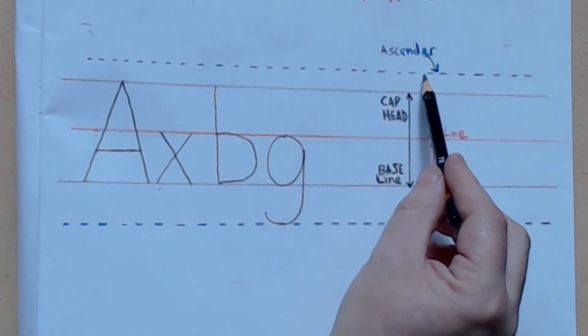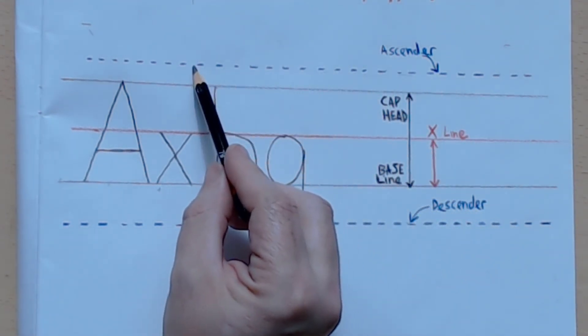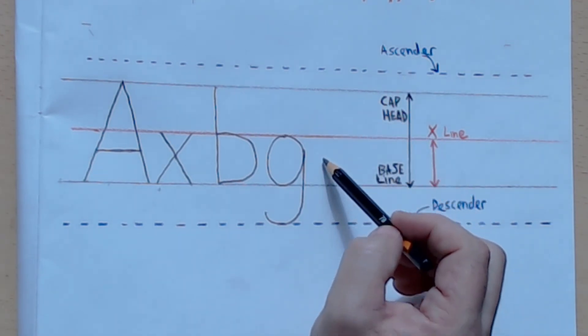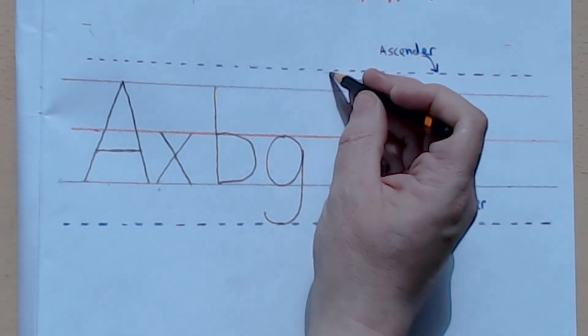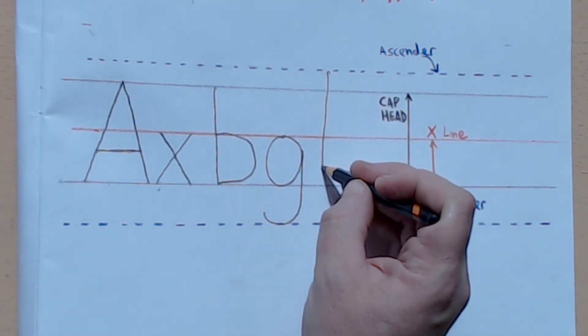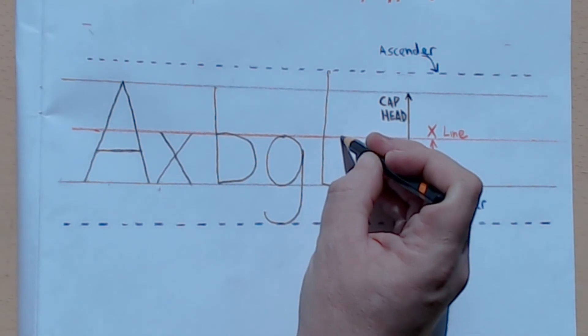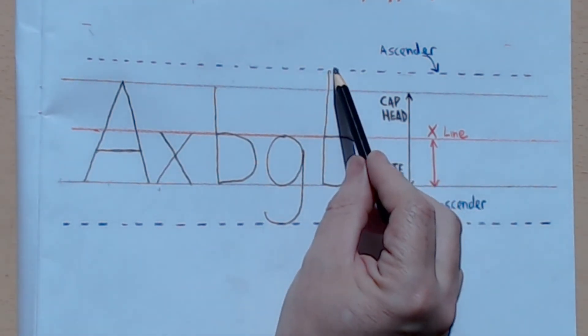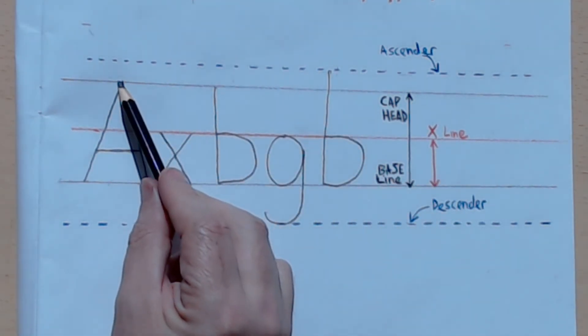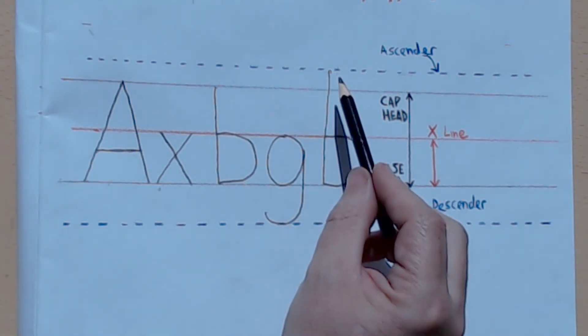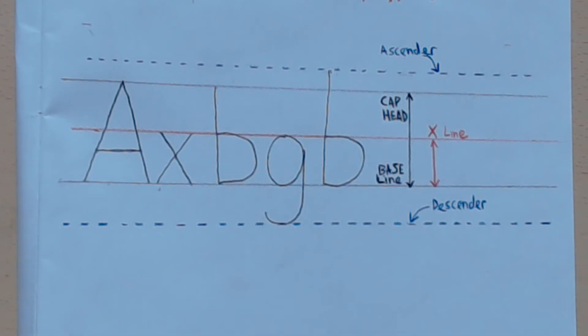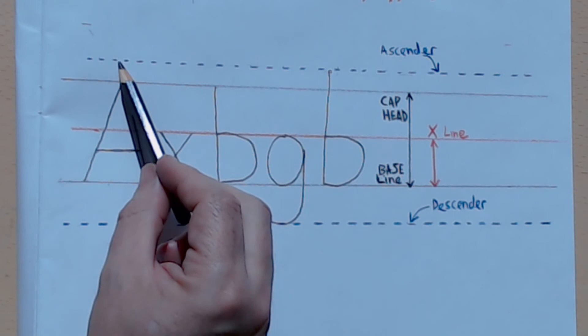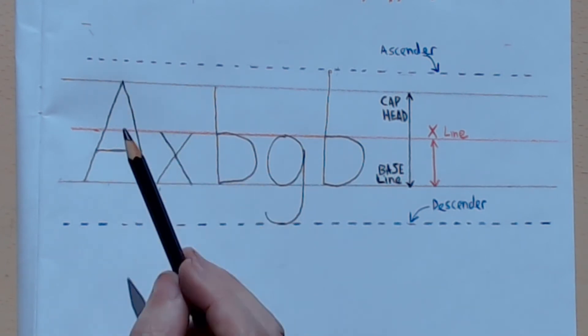And you can have letters that also go above to what's called the ascender. I'll use b again, but there are other letters that will do that. And that actually then goes above the height of the capital. It's not often used, but it does happen occasionally. So there are your vertical basic rules for spacing out.